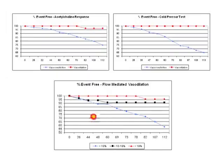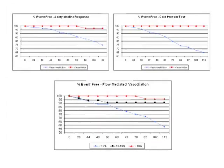Conversely, the worse your endothelial function, the more likely you are to have an event. How can we improve endothelial function? First, we must understand its biochemistry. The endothelial cells are chemical factories — they make all sorts of different angiochemicals: vasodilatory, vasoprotective, and vasoconstrictive agents.